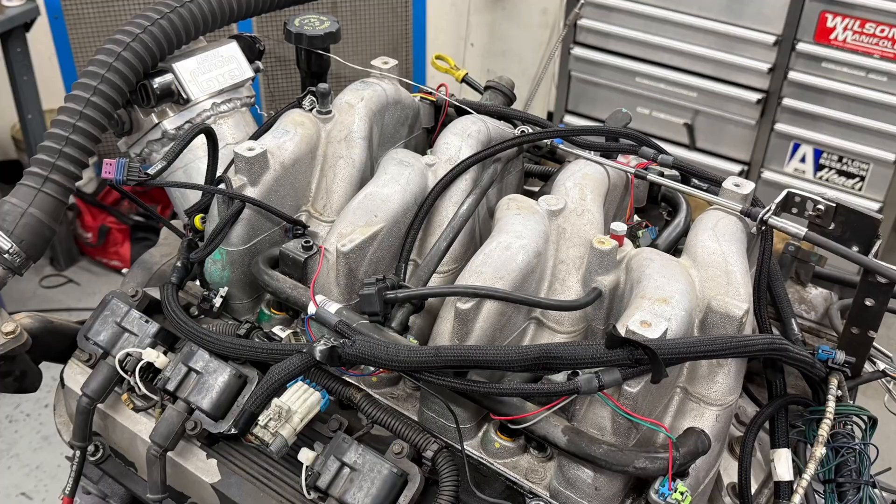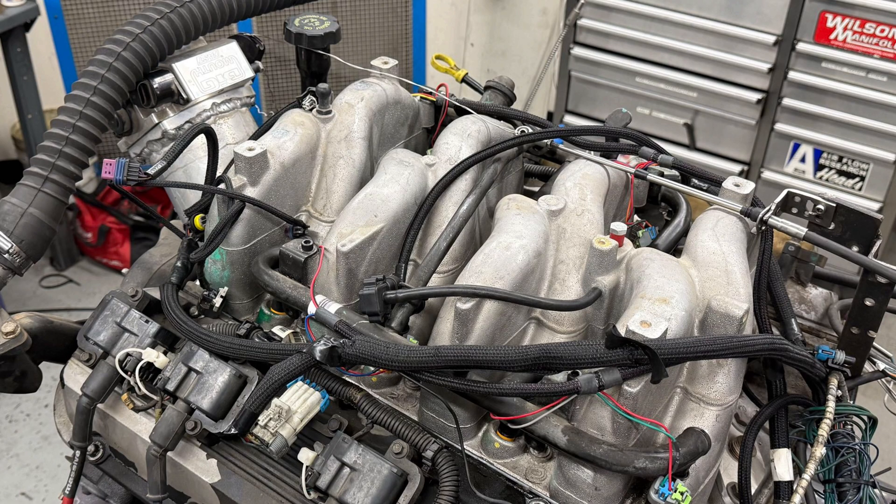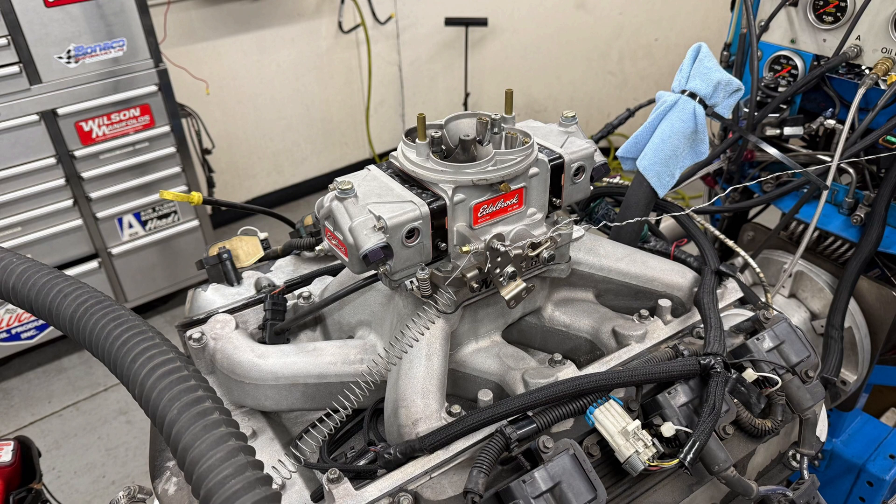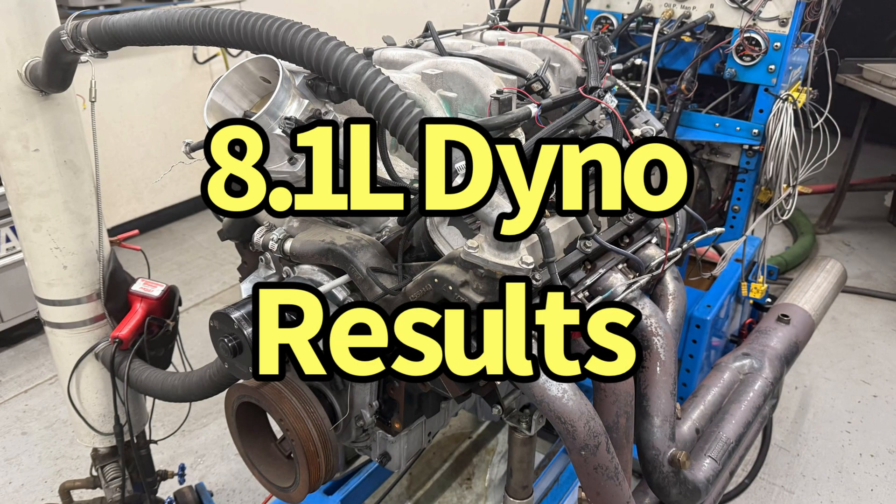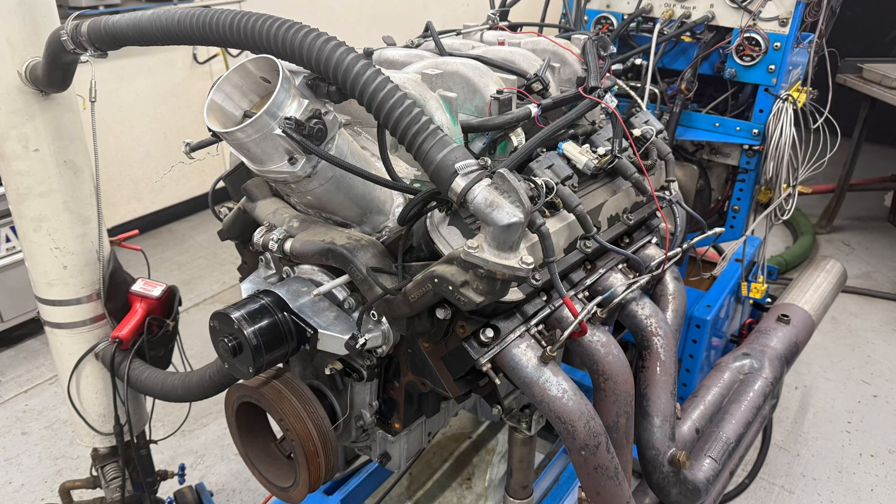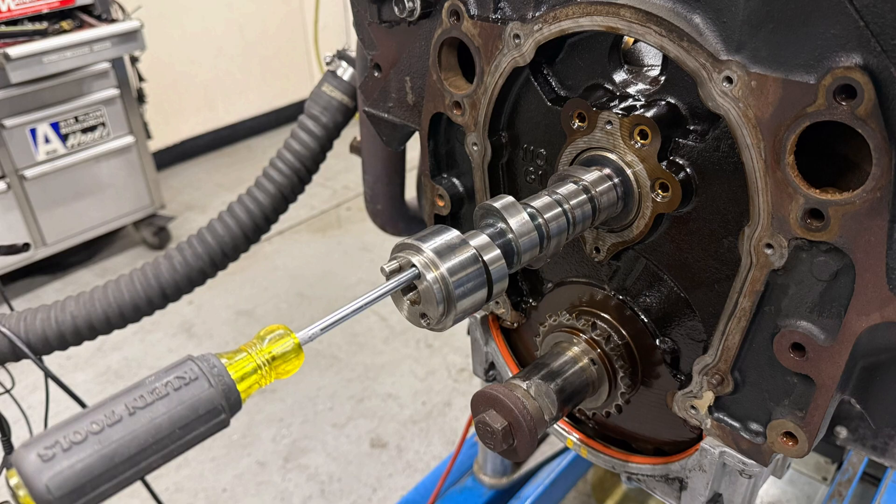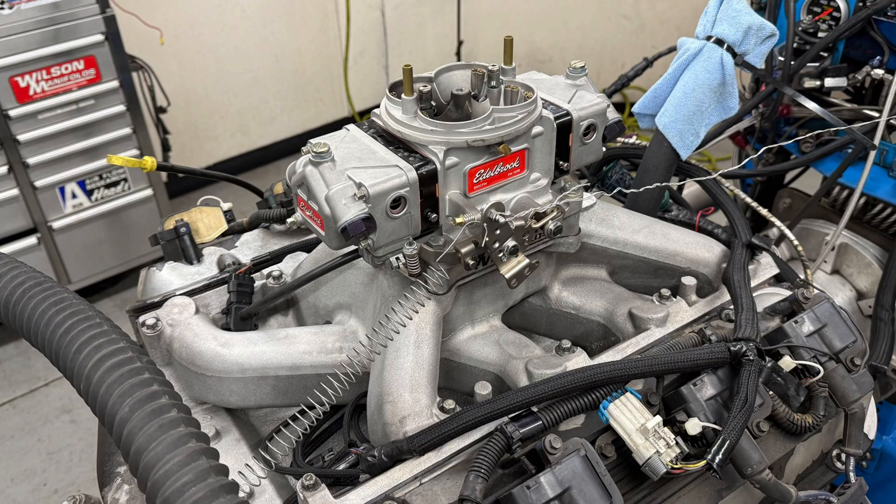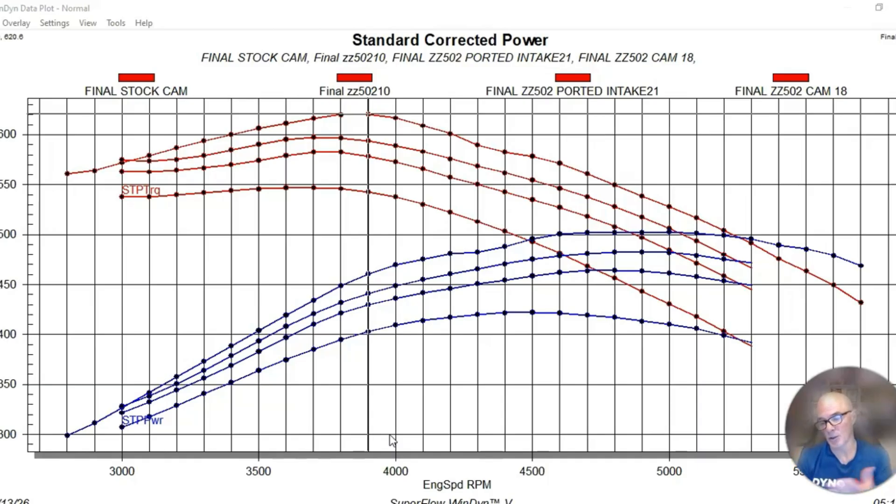I also tested a comparison between the EFI intake manifold and the Dart carbureted dual plane manifold. Which one of those makes more power? We got to take a look at our 8.1 and the testing that we did on the new RHP Elgin Stage 1 camshaft and the Dart dual plane intake manifold. But before we can do that, we need to re-establish a baseline.